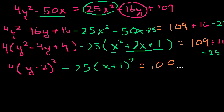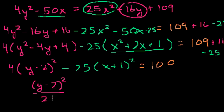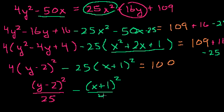We're almost there — we want a 1 on the right-hand side, so let's divide both sides by 100. You get (y minus 2) squared over 25 minus (x plus 1) squared over 4 equals 1. And there we have it in standard form. Yes, indeed, we do have a hyperbola.